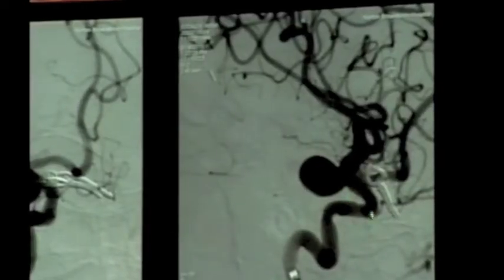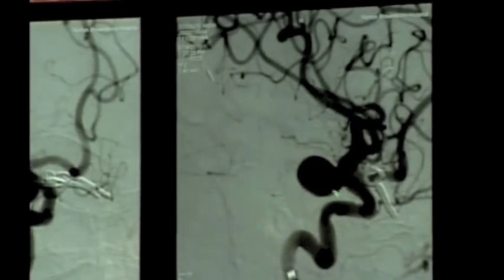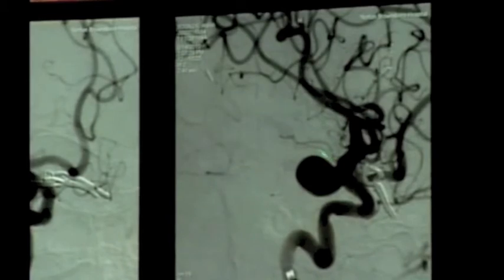Here we're looking at a two-dimensional angiogram of the carotid artery. You can see the carotid artery there and then an aneurysm fundus and the aneurysm neck.